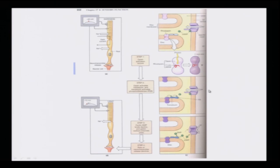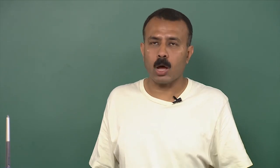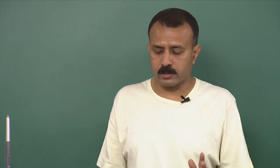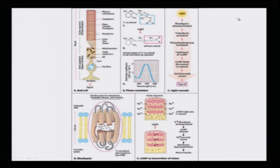Phosphodiesterase is binding and removing this gate. It was the cyclic GMP holding the sodium channel open. Once light falls, cyclic GMP is removed from that binding site by phosphodiesterase — the channel closes, and the current flow through the sodium channel stops. This is how signal transduction within the light takes place. Light → rhodopsin photo-activated → transducin activated → phosphodiesterase activation → hydrolysis of cyclic GMP → cyclic GMP decrease in cytosol → sodium channel closes → signal moves.